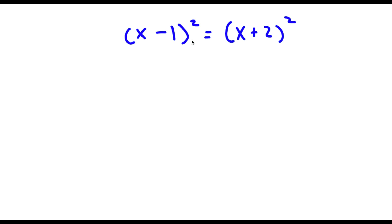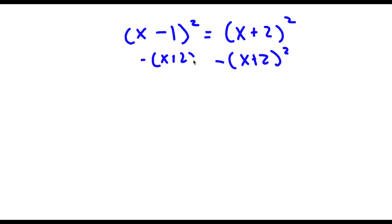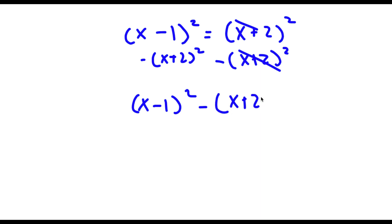Alright, so I have x minus 1 squared is equal to x plus 2 squared. Now the first thing I'm going to do is subtract x plus 2 squared on both sides. So then on my right hand side these two are going to cancel out, and on my left hand side I have x minus 1 squared minus x plus 2 squared, and this is equal to 0.